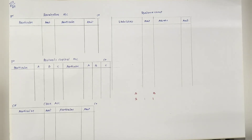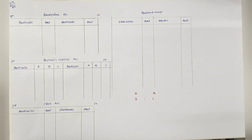उसमें सबसे पहले हम देखते हैं liability side. तो capital A and B दिया है, फिर reserve fund दिया है, next creditors and last bills payable. Asset side देखते हैं - plant and machinery, building, stock, debtors minus bad debt reserve, and cash or bank. यह था balance sheet.